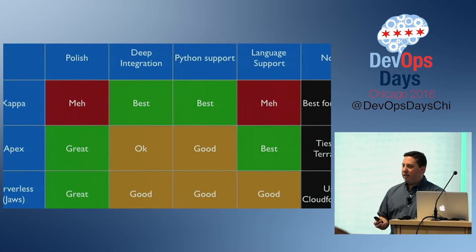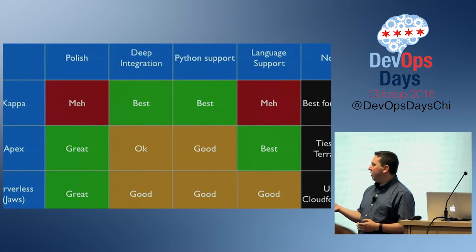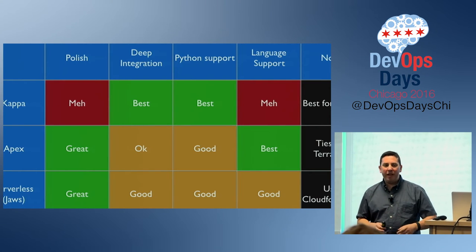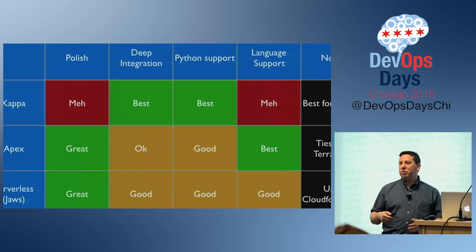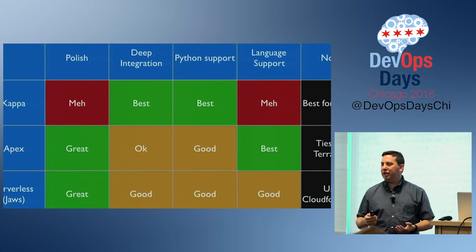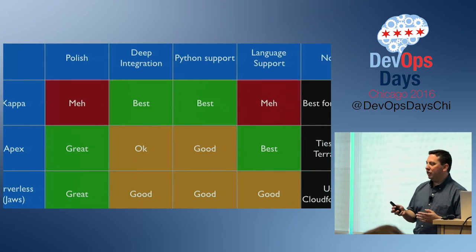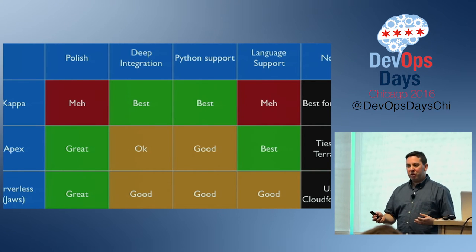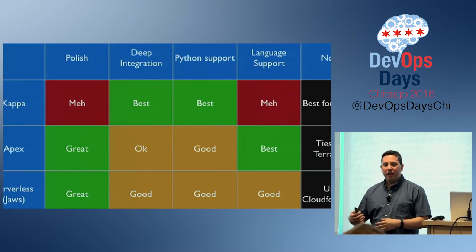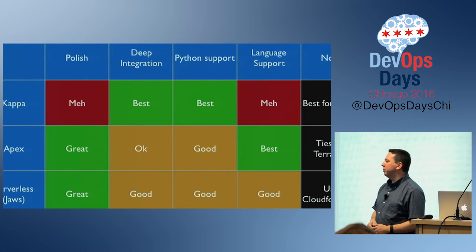There are a bunch of different libraries for managing this, and they all work kind of the same way. There's Apex, which works almost exactly the same way as Kappa — the command lines are slightly different. Apex does let you do a bunch of other languages, using a JavaScript shim that lets you run pretty much any language on the Lambda container. Serverless framework uses CloudFormation, so if you have a lot of other infrastructure, it ties in very nicely. And if you're using Terraform, Apex ties in directly to Terraform.